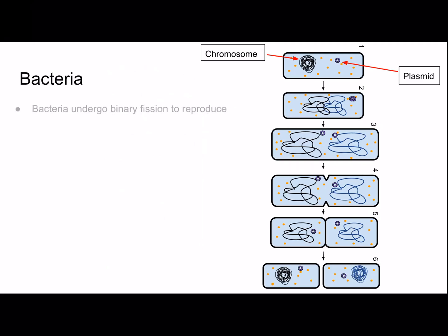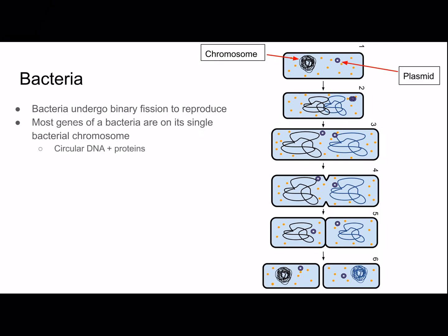Bacteria undergo binary fission to reproduce. Most genes of a bacterium are on its single bacterial chromosome, which is made of circular DNA and proteins. However, bacteria also sometimes have plasmids — small circular pieces of DNA with a few genes. A plasmid can replicate on its own if it has an origin of replication; if not, it will integrate into the cell's chromosome for replication. Copying of DNA begins at the origin of replication, which is a specific place on the bacterial chromosome.